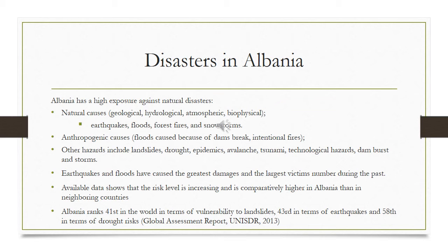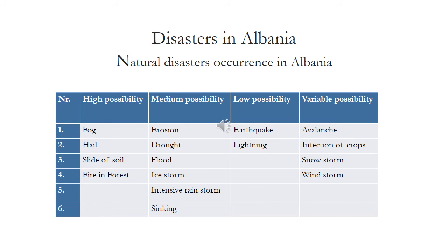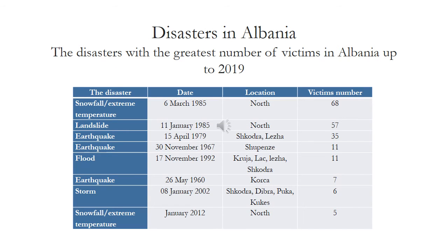Now I will focus on Albania and how all these topics relate to this country. Albania has a high exposure to natural disasters, either from natural causes, anthropogenic causes, or other kinds. In fact, Albania ranks 21st in the world in terms of vulnerability to landslides, 43rd in terms of earthquake, and 58th in terms of drought risk. This table shows different kinds of disasters that may hit the country and their related frequency or probability of occurrence. And in this table, some of the most devastating disasters in terms of casualties that have hit Albania are summarized.